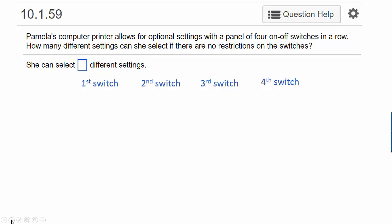Starting with the first switch, we have two possibilities—either the switch is on, or the switch is off. When the first switch is on, the second switch can be on or off. When the first switch is off, the second switch can be on or off.